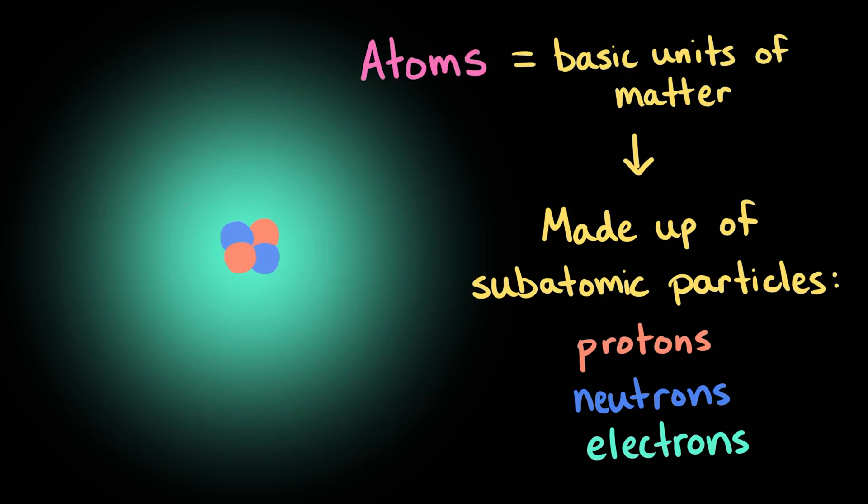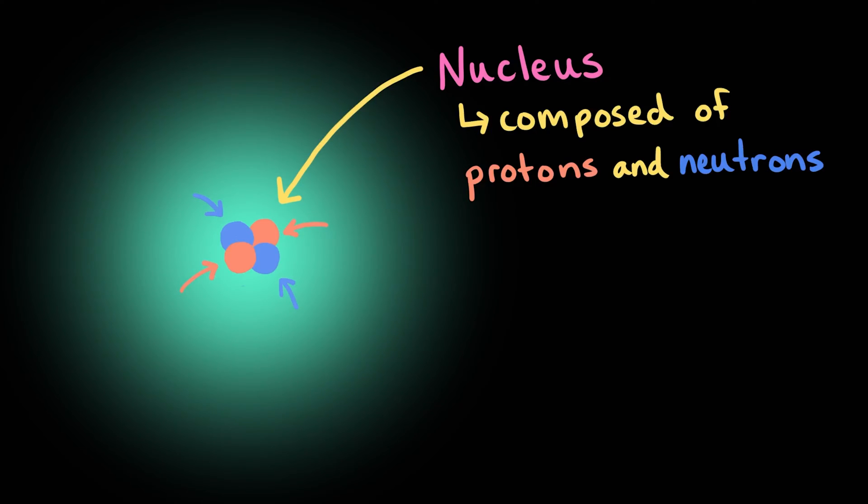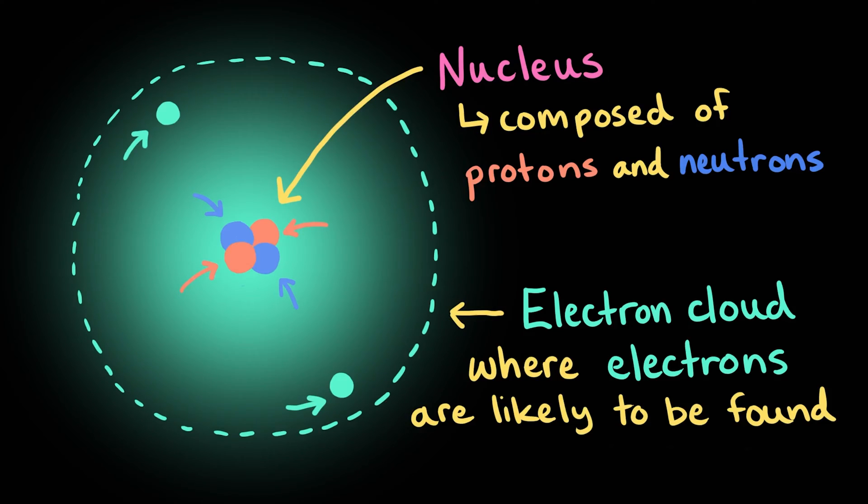Let's take a look at this simplified diagram to learn more about these subatomic particles and the structure of an atom. In the center of an atom we have the nucleus, which is composed of protons and neutrons. Outside the nucleus we have the electron cloud. This is where electrons are most likely to be found.